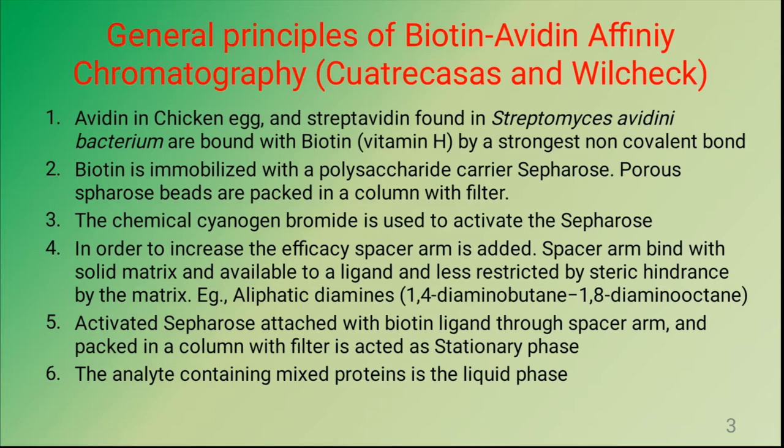For chromatography, the biotin is immobilized with a matrix called sepharose. Sepharose beads are packed in a column and biotin is immobilized. The chemical cyanogen bromide is used to activate the sepharose. In order to increase the efficacy of binding, a chemical called a spacer arm is added. The spacer arm binds with the solid matrix and is available to the ligand, and is less restricted by steric hindrance by the matrix.